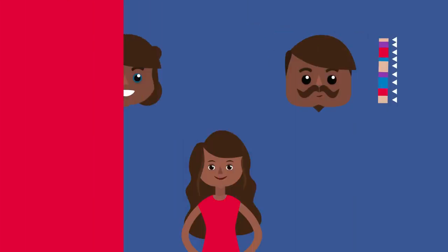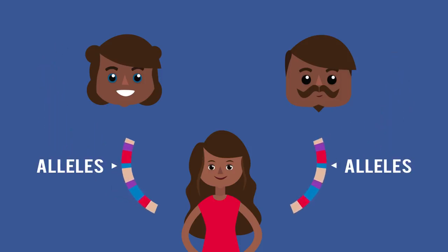You inherit genes from your parents and you have two copies of each gene. One from your mother and one from your father. Genes come in different forms called alleles. Alleles may be recessive or dominant.